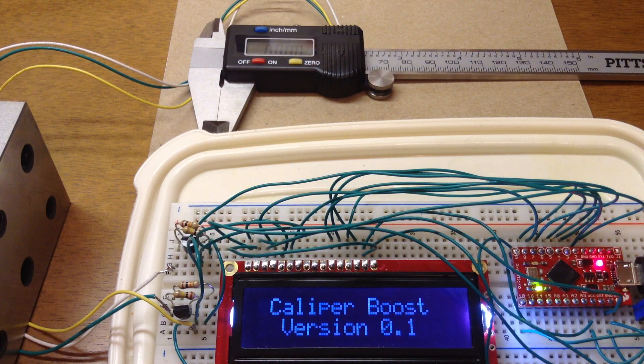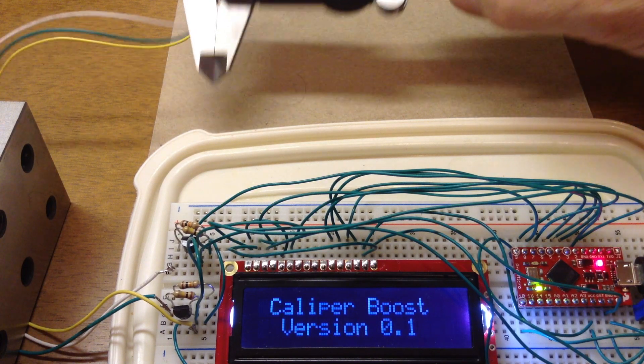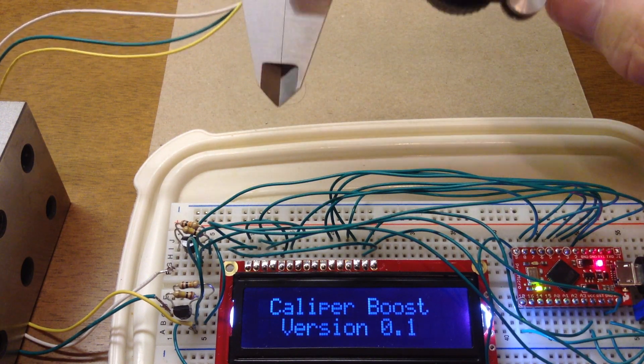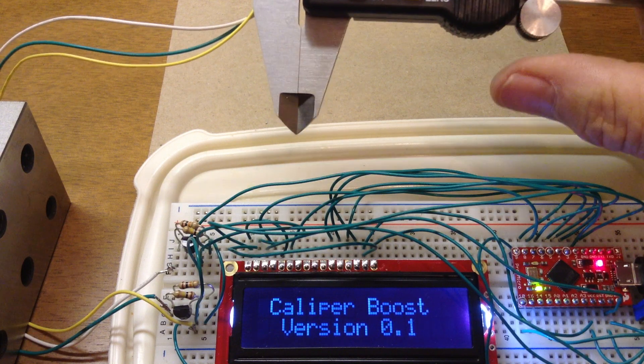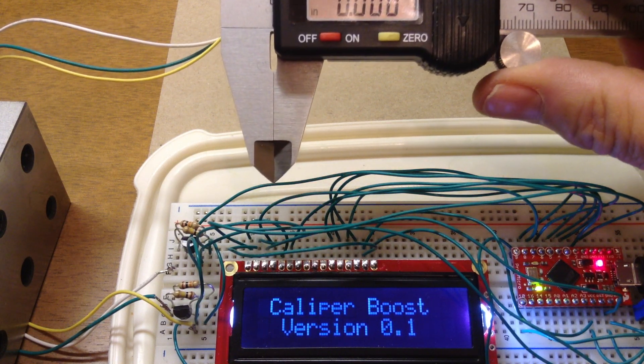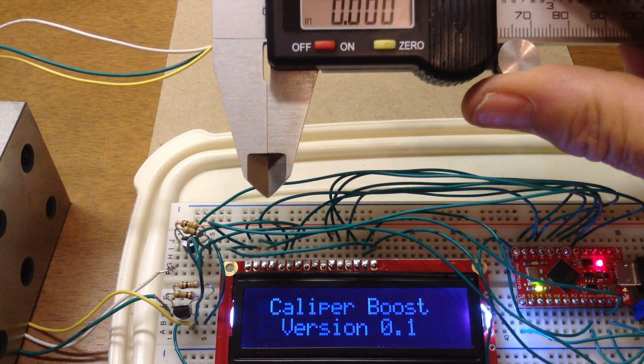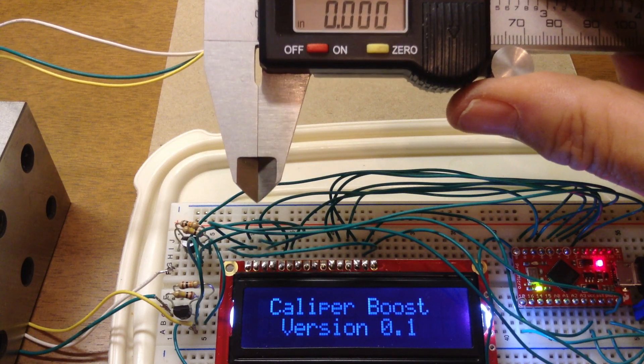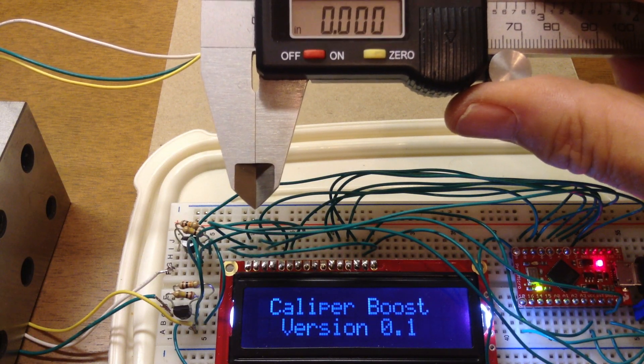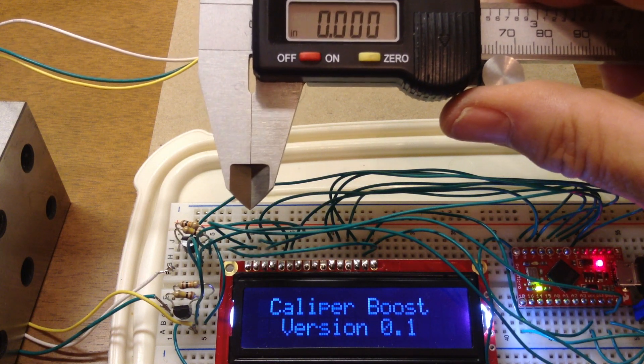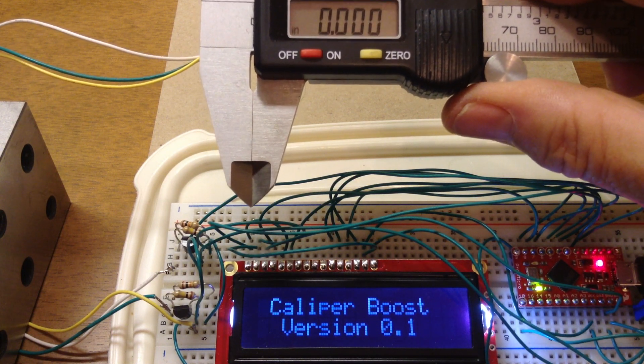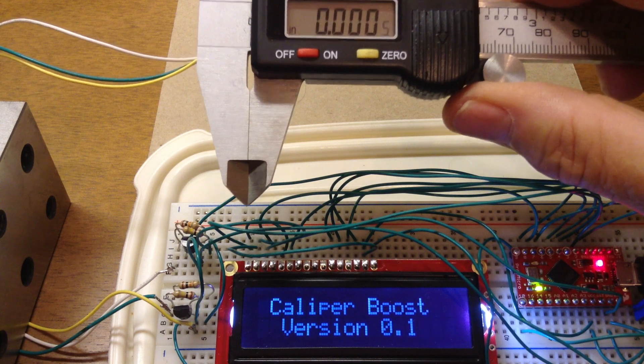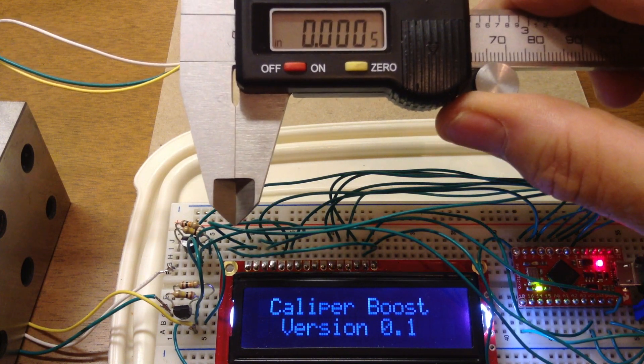When I first power it up, it's going to show me the version number. Right now the jaws aren't moving. As I open the jaws, the software is trying to record what was the local minimum that it saw. Since it just powered up, the first reading isn't too meaningful because it doesn't know what the local minimum was before it powered up.